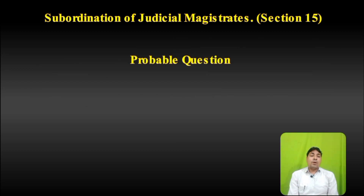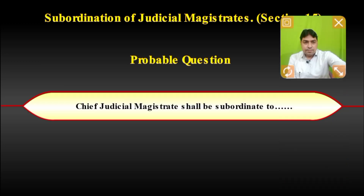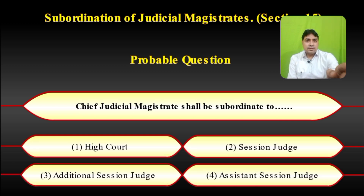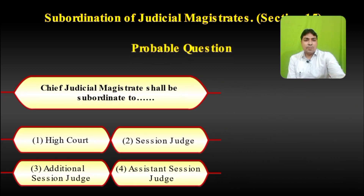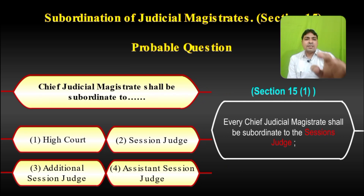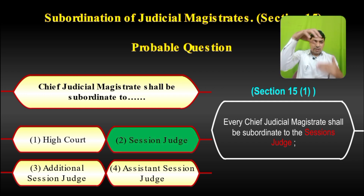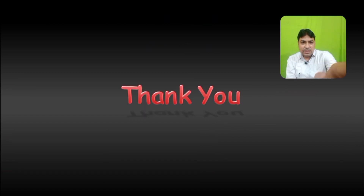Probable question on subordination: Chief Judicial Magistrate shall be subordinate to — High Court, Session Judge, Additional Session Judge, or Assistant Session Judge? Section 15 sub-clause 1 के हिसाब से, CJM Session Judge के subordinate है। So the correct answer is Session Judge.